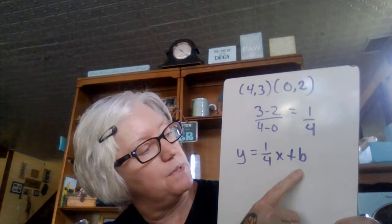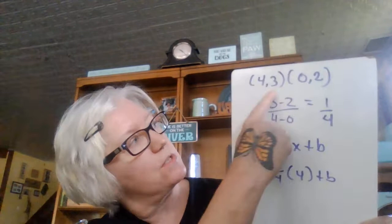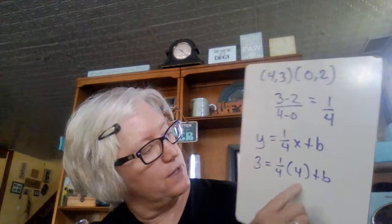Then I can go ahead and pick a point and plug it into the equation. So, I'm going to use x is 4 and y is 3. So, I have 3 equals 1/4 times 4 plus b. That's y was 3 here. Slope was 1/4. x is 4. Solve for b. 1/4 of 4 is 1. So, 3 equals 1 plus b. Subtract 1 from both sides. I get 2 equals b. So, my equation is y equals 1/4x plus 2.